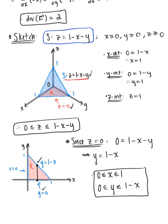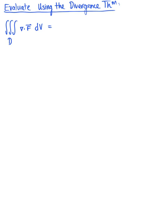We now have everything we need: bounds on x, y, and z, and the divergence equals 2. We evaluate the triple integral over solid region D of the divergence of the vector field with respect to volume. The outer integral is the x-bounds from 0 to 1, the middle integral is the y-bounds from 0 to 1 minus x, and the inner integral is the z-bounds from 0 to 1 minus x minus y. The integrand is 2 dz dy dx.